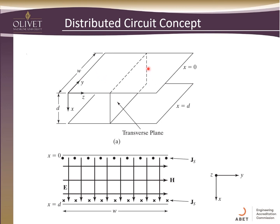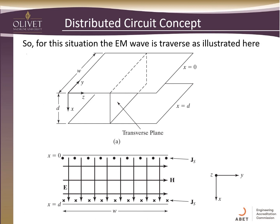Here's the setup for our model. We have our parallel plates running along here, with our transverse planes. Our wave will be propagating down this pathway. The E fields will be in the X direction, and the H fields — or magnetic fields — will be in the Y direction. The Z component, which is in and out of the board, is the direction of current flow or current density on the plates. This is where we get the term transverse. This picture is actually looking down the edge, or one end of these plates. The EM wave is transverse as illustrated.